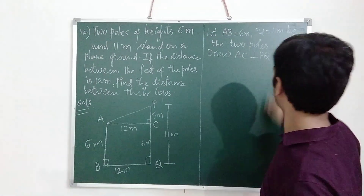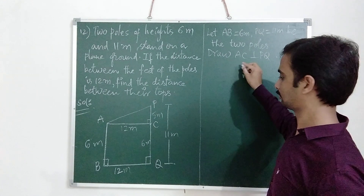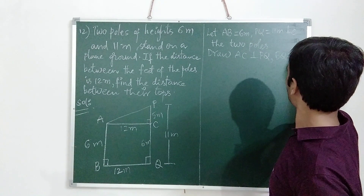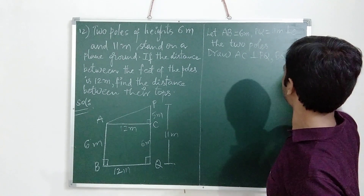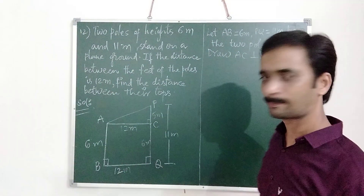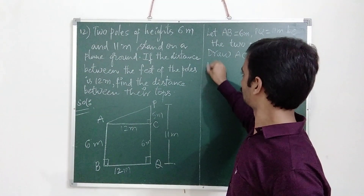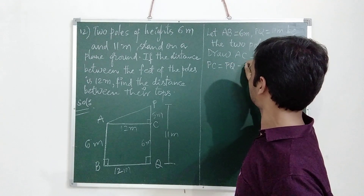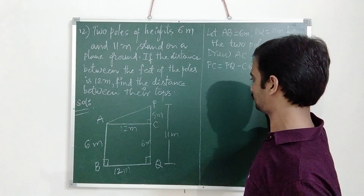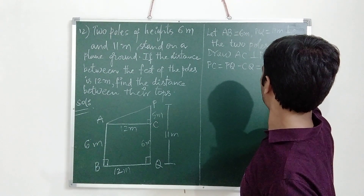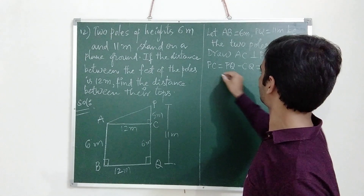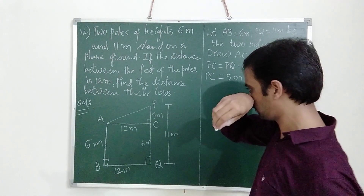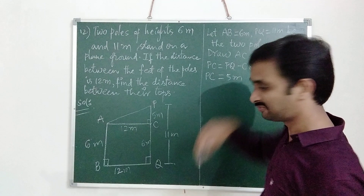Given: BQ is equal to 12m. PC is equal to PQ minus CQ. PQ is 11m, CQ is 6m, so 11 minus 6 is 5m. Therefore PC is equal to 5m.